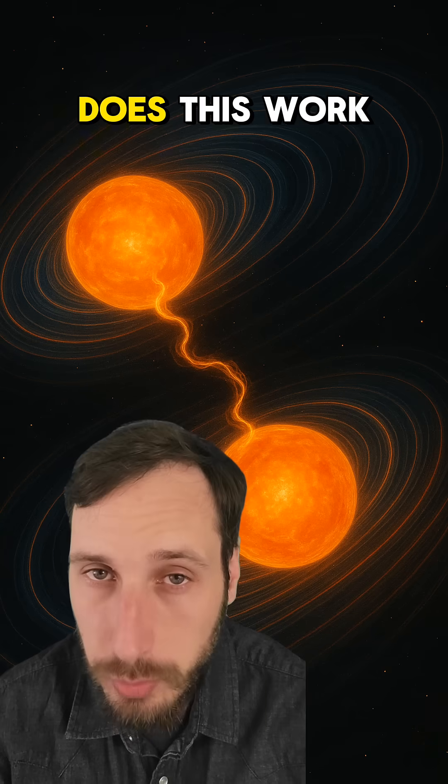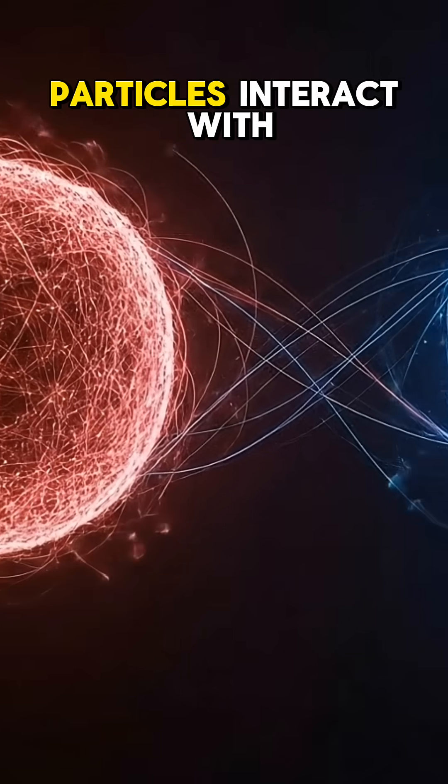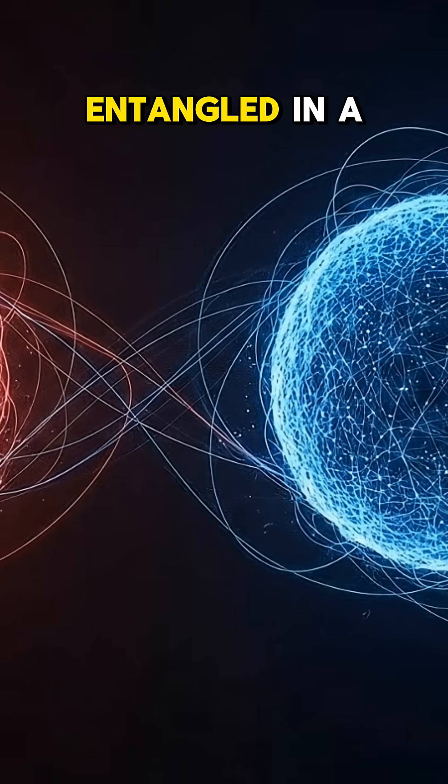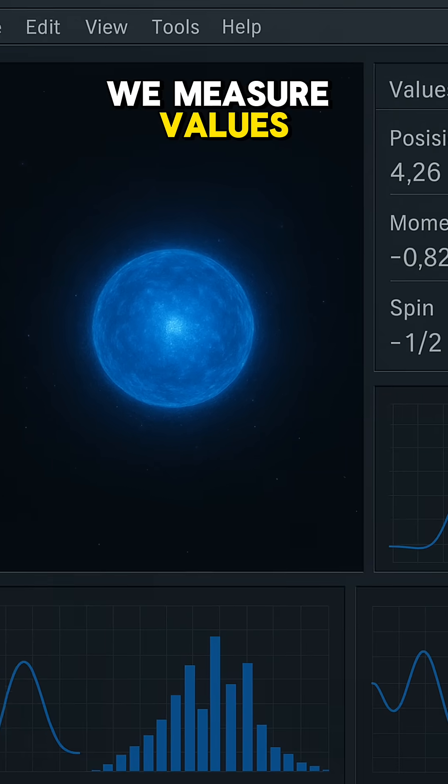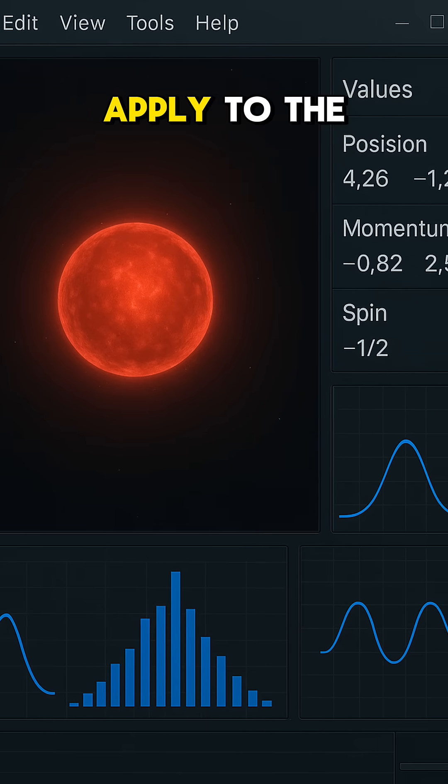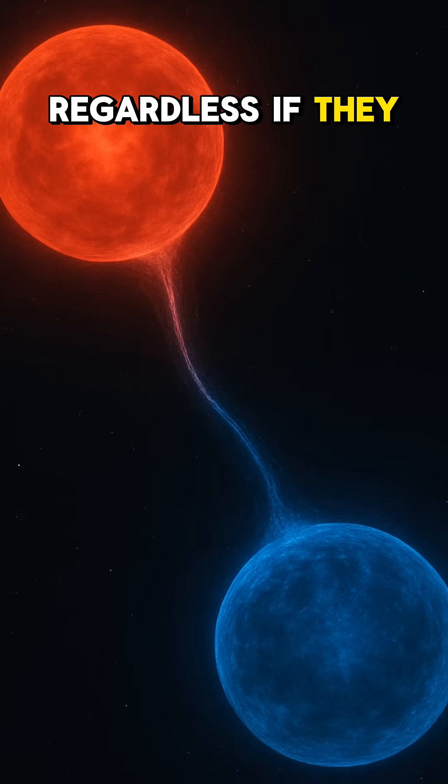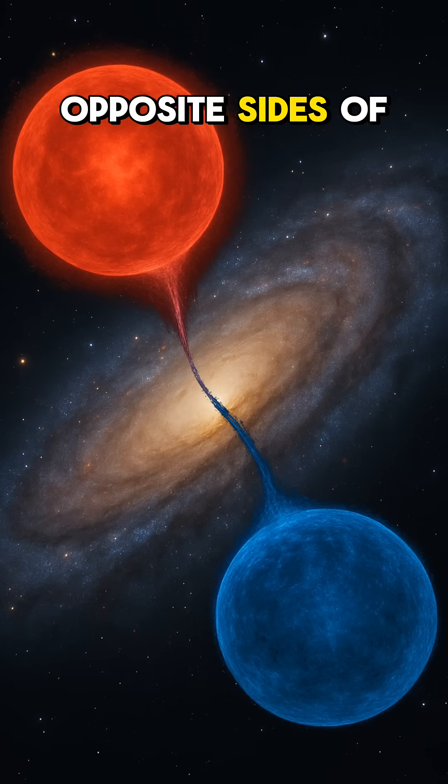So how exactly does this work? Well, this concept explains that if two particles interact with each other, they can get entangled in a way that if we measure values for one, they will automatically apply to the other one, regardless if they are next to each other or on the opposite sides of the universe.